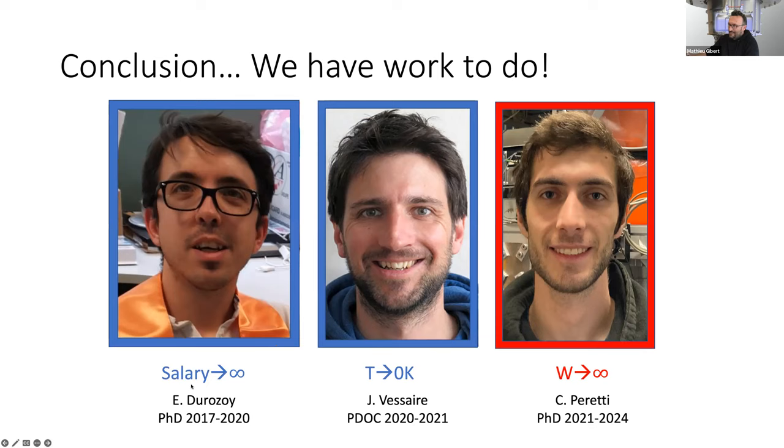And these guys have evolved also. Emmerich went to the private sector. Jeremy went to, let's say, T-close to zero. That means he's working on dilution fridges that are hopefully going to fly in satellites one day. And therefore, Charles has a work that extends to infinity for the next few years. And with this, I conclude my webinar. I'm happy to answer questions if you have.